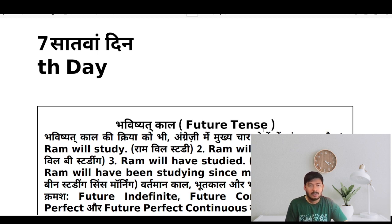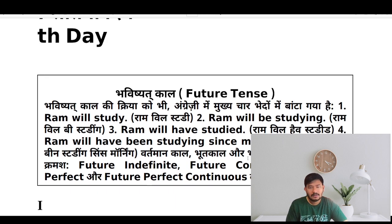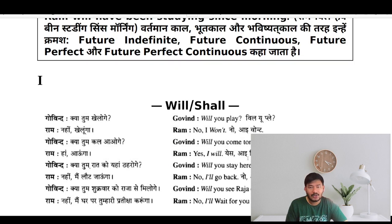The four types are: Ram will study, Ram will be studying, Ram will have studied, and Ram will have been studying since morning. These are the four types of future tenses and today we will be learning about the use of will and shall.